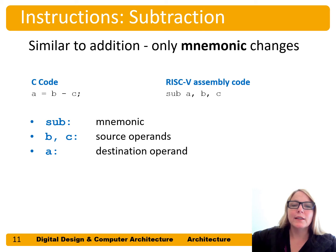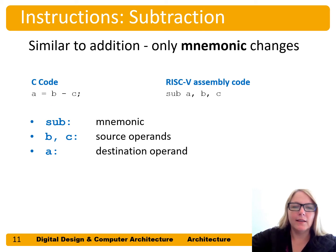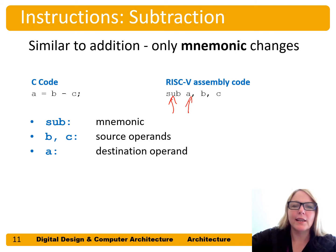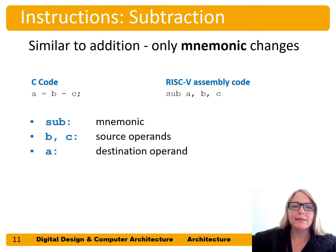Subtract is very similar. The only difference is we have a equals b minus c, and we simply change the mnemonic from 'add' to 'subtract'. We have 'subtract', and again our destination and our two source operands performing a equals b minus c.